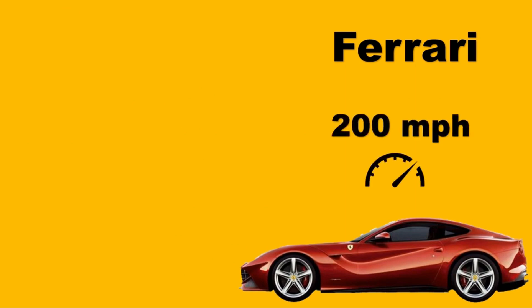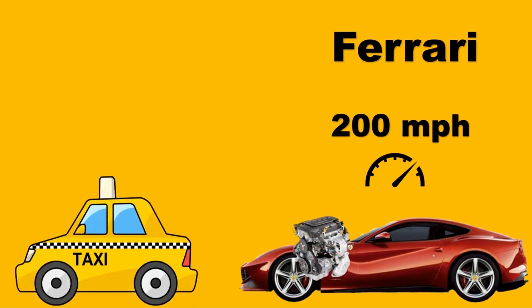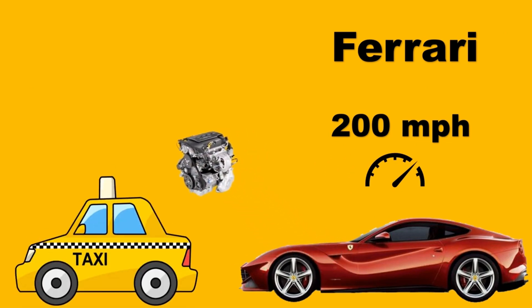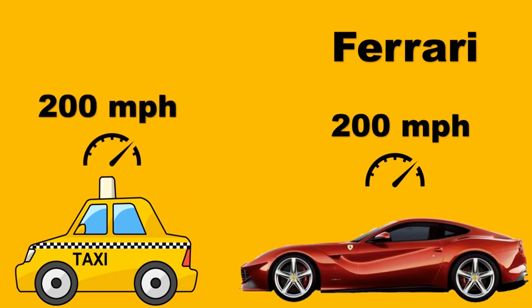Let's imagine that we have a Ferrari, and a Ferrari can run at very high speed — let's say 200 miles per hour. Now, as an experiment, we take the engine out from the Ferrari and put it in an old, used-up taxi. Will the taxi work at the same speed of 200 miles per hour? What is your logic saying — will it really be able to sustain this?